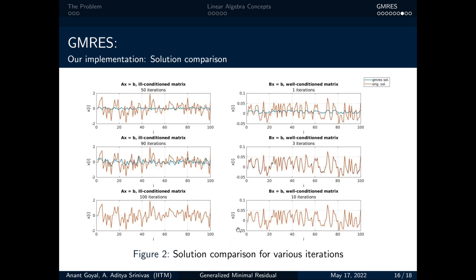Now, we will compare the solution of GMRES with the exact solutions. On the left side, the solution comparison is shown for matrix A and on the right side for matrix B. We can clearly see that in 50 iterations, the GMRES solution is nowhere near the exact solution. On increasing the number of iterations to 90s, the GMRES started to converge and in about 100 iterations, it almost gave the original solution.